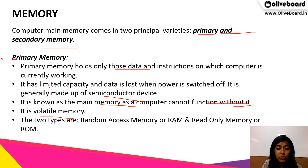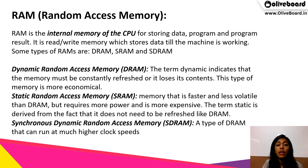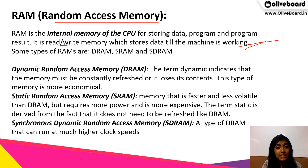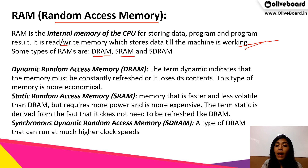The two types of primary memory are RAM and ROM — random access memory and read only memory. RAM is the internal memory of the central processing unit and it helps in storing data, programs, and program results. It is a read/write memory which stores data only while the machine is working. Since it is part of primary memory, if our computer gets discharged, the data cannot be stored. Some types of RAM are DRAM, SRAM, and SDRAM.